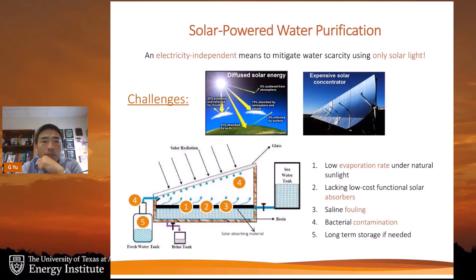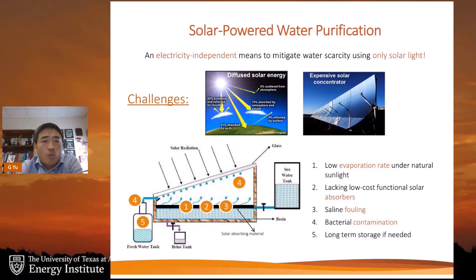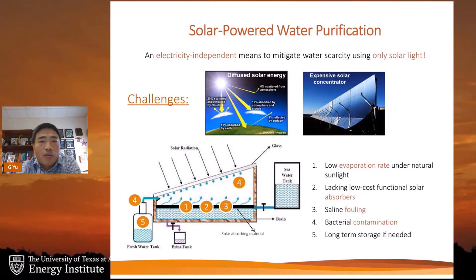One of the most promising ways to purify water is using a more sustainable approach — solar energy — which is the most abundant energy source. If we can develop technology to produce clean water using only solar energy as input, it becomes much more sustainable and portable. However, a key challenge of solar-powered processes involving water evaporation is that solar energy is diffuse, requiring high energy demand for efficient evaporation, and solar concentration is often needed.